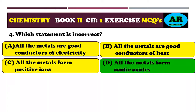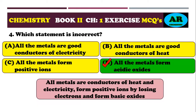Metals are good conductors of heat as well as electricity. Metal oxides are basic oxides, not acidic oxides. Therefore, the statement 'all metals form acidic oxides' is incorrect. The correct option is delta.